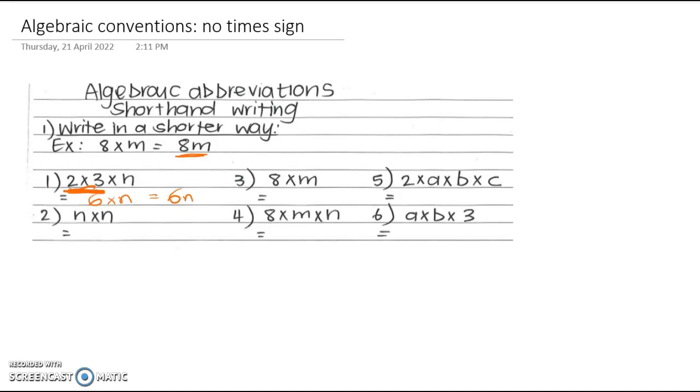All right, n times n. Well, n times n means n squared, right? So just how we did it in number, when we had 3 times 3, we learned this year that 3 times 3 was 3 squared. Well, n times n is going to equal n squared. 8 times m is going to equal 8m. 8 times m times n. So we don't have the times signs, and we just write 8mn.